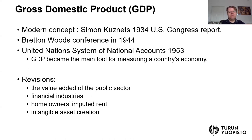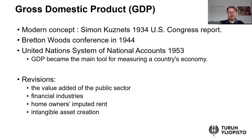In the initial system of national accounts, financial industries were largely left out because it was thought that financial services don't really produce anything — they only have an intermediating function. But later, the value added of financial industries was included in the system of national accounts and therefore also in GDP. Nowadays in countries such as Switzerland or the UK, financial industries have a very large proportion of GDP.